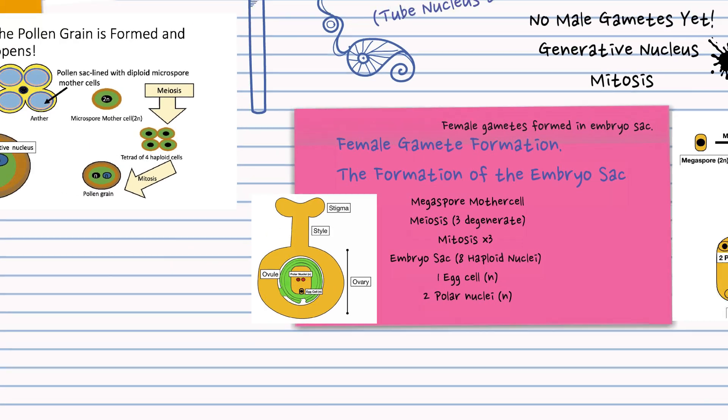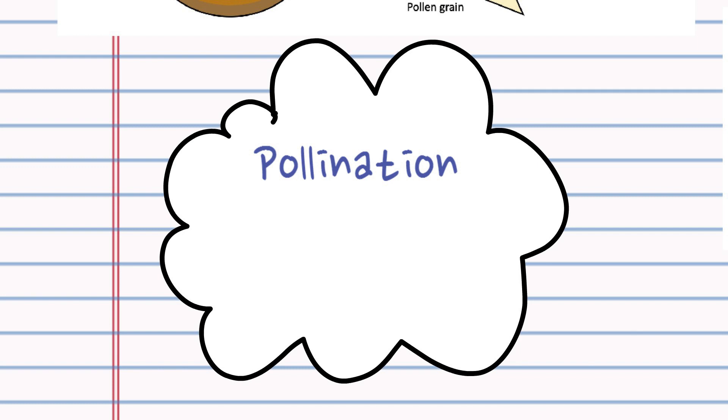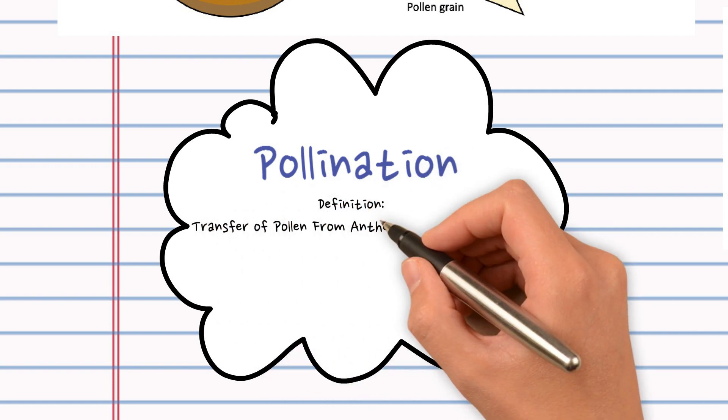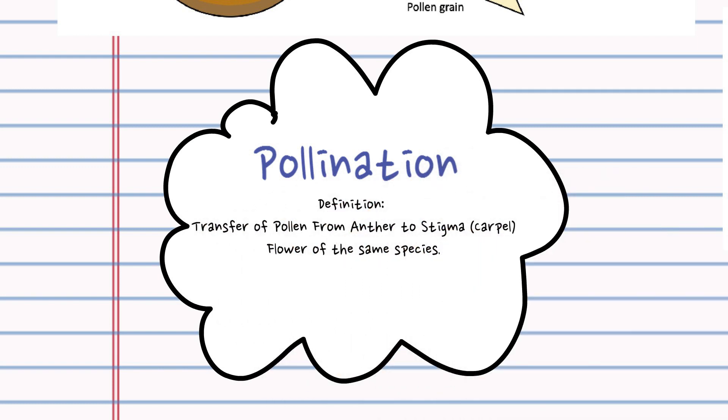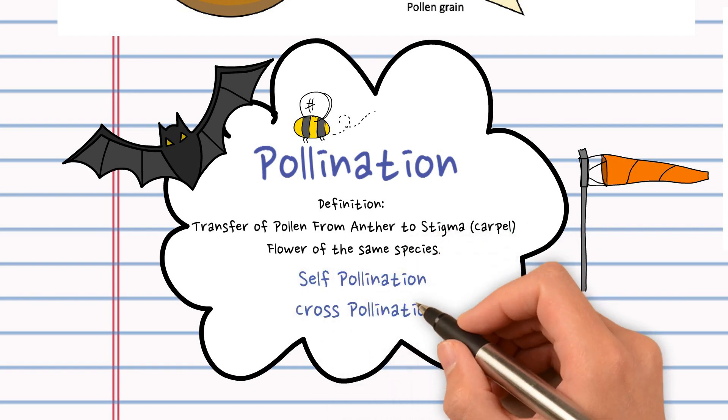So now we have the female gametes formed, let's go back to pollination. This is transferring the pollen grain from the male part, the anther, to the female part of the flower, the stigma of the carpel. This can either be done by the wind or it can be done by animals, in particular insects. There's self-pollination and there's cross-pollination. Note the difference between the two.